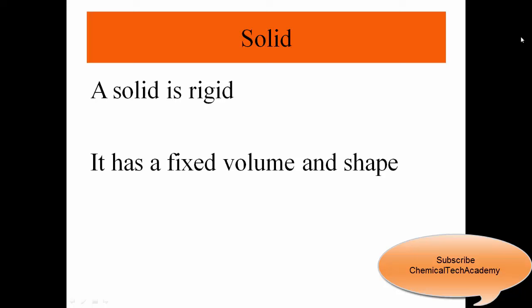A solid is rigid. It has a fixed volume and shape. In solid matter, atoms and molecules pack close to each other in a fixed location. Although the atoms and molecules in a solid vibrate, they do not move around or pass each other. So a solid is a form of matter that has its own definite shape and volume.